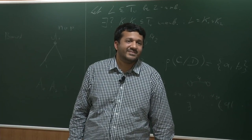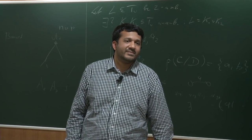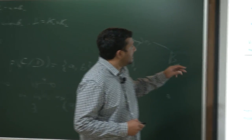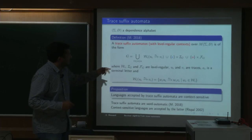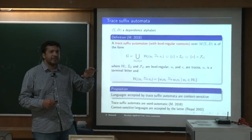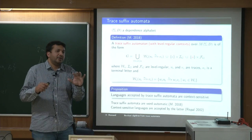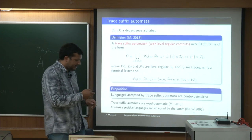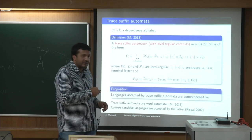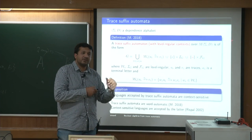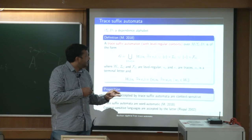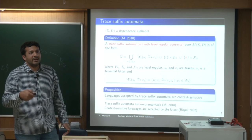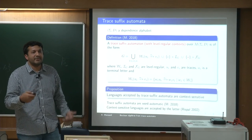How do you define the language of a vector addition system? In fact, we consider only deterministic vector addition systems. So this set of initial vertices is just a singleton. And we have a level-regular set as the final vertices.